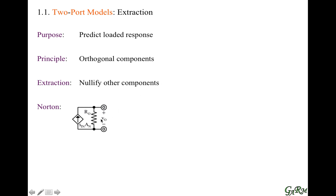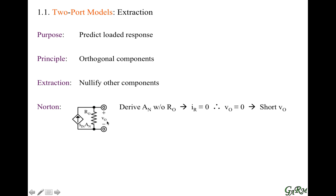For example, when we have a Norton equivalent model — a current source in parallel with a resistor — when we derive the current gain of that current source, we need to nullify the effects of the output resistor. Since we're talking about current, the current through this output resistor needs to be zero. For the current to be zero through a resistor, the voltage needs to be zero, so we need to short the output. This is a short circuit test.